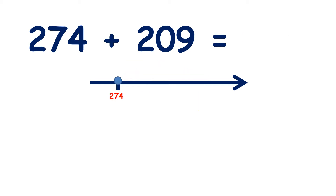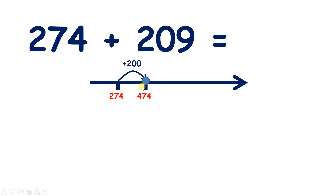Now pause the video and see if you can answer 274 plus 209. So we add two hundreds. If we add two hundreds, that gives us four hundreds, and of course we still have the 74 that we started with.